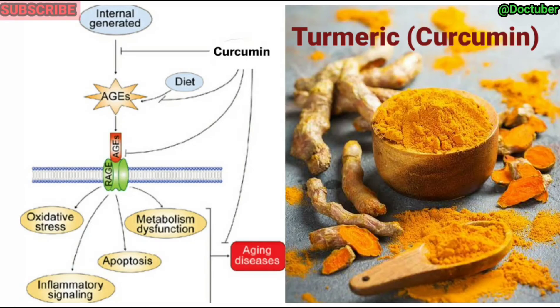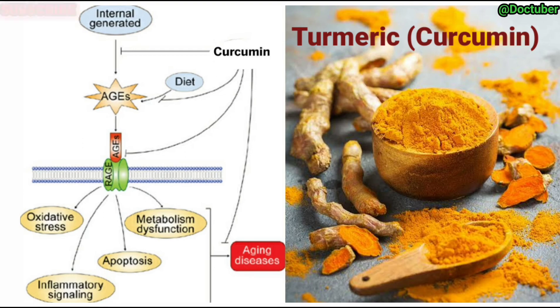Turmeric, which contains curcumin, can be of great benefit in preventing damage from AGEs. Curcumin breaks down the cross-linking proteins in AGEs and thus helps in preventing inflammation.